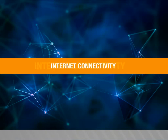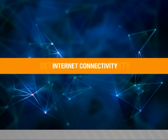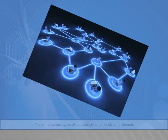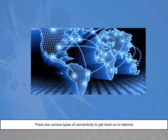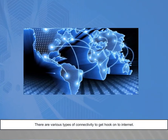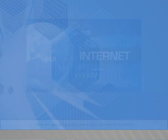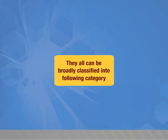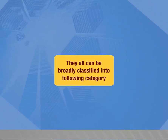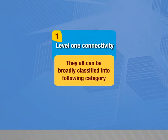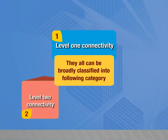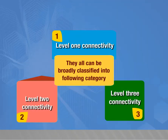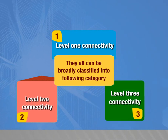Internet connectivity. In this video, we are going to see about what is internet connectivity. There are various types of connectivity to get hooked onto the internet. They all can be broadly classified in the following categories: Level 1 connectivity, Level 2 connectivity, and Level 3 connectivity.